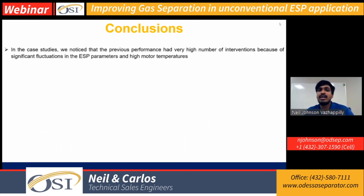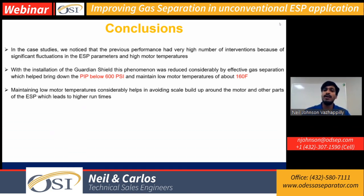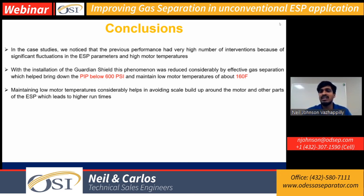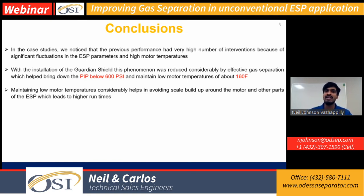Those are the two case studies. What we were trying to show is the effects of this gas separation tool — pump parameters before and after, and total production before and after. In most of these wells with ESPs and high gas issues, it's very difficult to get pump intake pressure below 600 PSI and keep it stable. Motor temperatures are difficult to maintain at a lower stable rate close to fluid temperature. The secondary failures caused by gas — scale formation from high motor temperatures — were also addressed using this system.